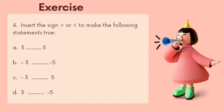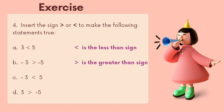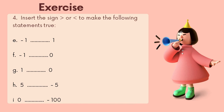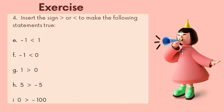Question four: insert the greater than or less than sign to make the following statements true. Remember, if you look at your left hand index finger and thumb squeezed together, you have the less than sign. So: three is less than five; negative three is greater than negative five; negative three is less than five; and three is greater than negative five. Also: negative one is less than one; negative one is less than zero; one is greater than zero; five is greater than negative five; and zero is greater than negative 1.5.